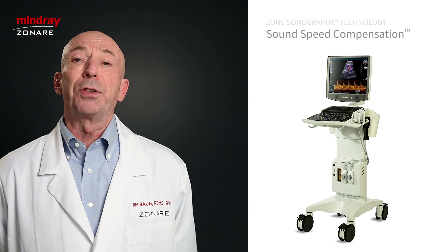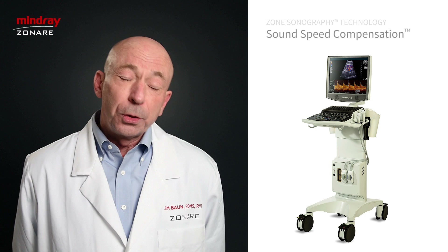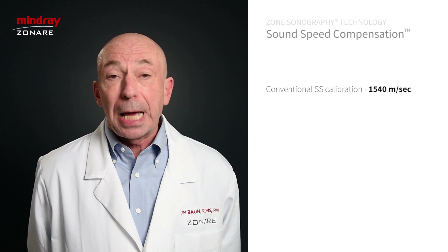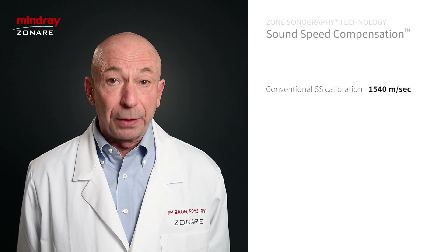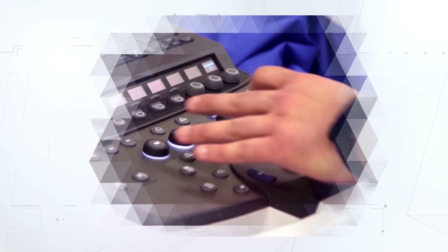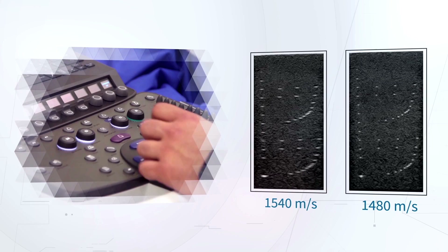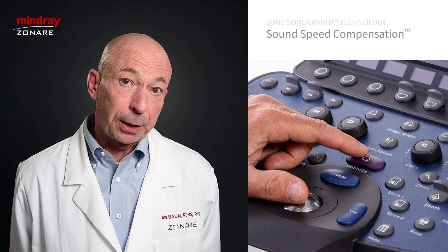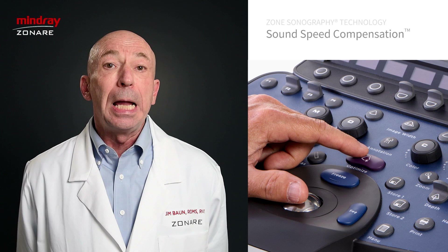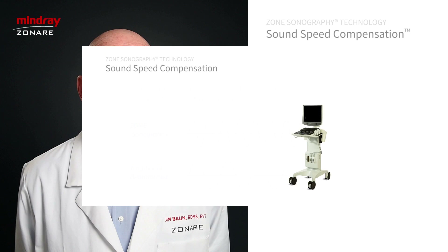The third pillar of zone sonography technology is automated sound speed compensation. Traditional ultrasound systems make the incorrect assumption that acoustic waves travel through human soft tissue at 1540 meters per second. In fact, that is an average value. In reality, the speed of sound propagation varies from between 1450 and 1650 meters per second based on the physical characteristics of the medium through which it is traveling. Sound speed compensation allows the operator, with a single button touch, to initiate a proprietary method that recalibrates the imaging system to reflect the true speed of sound in a particular organ or body part, increasing spatial resolution throughout the field of view.